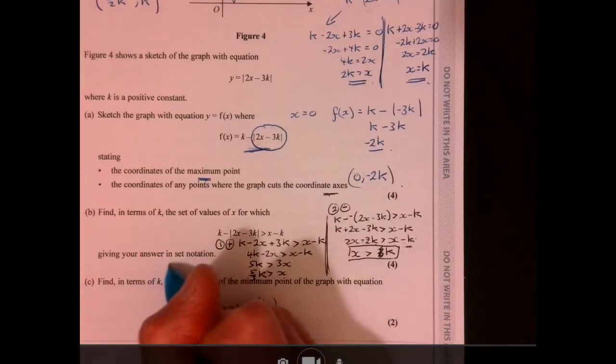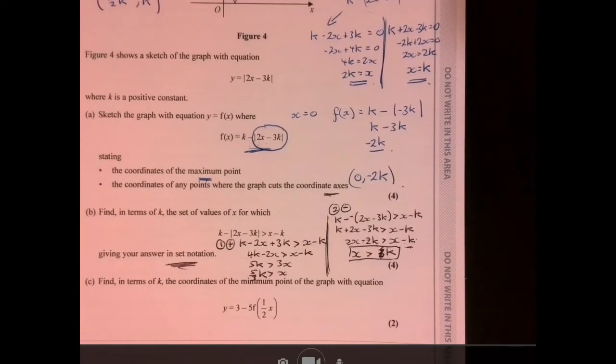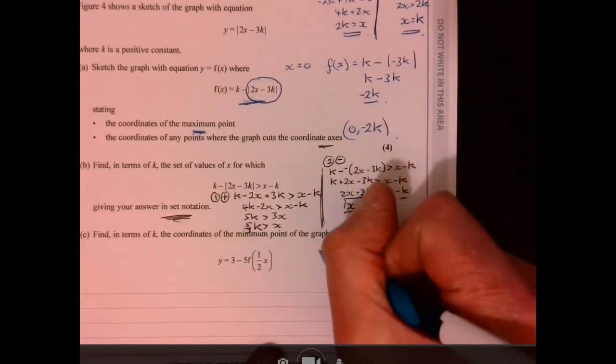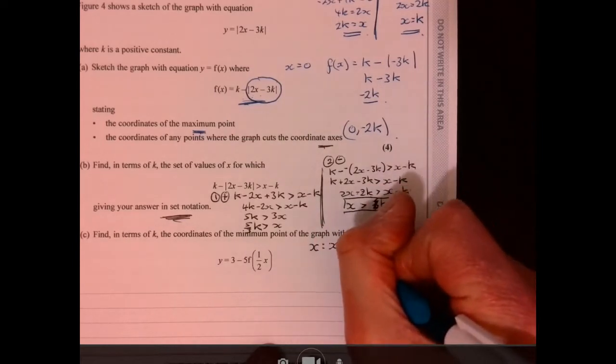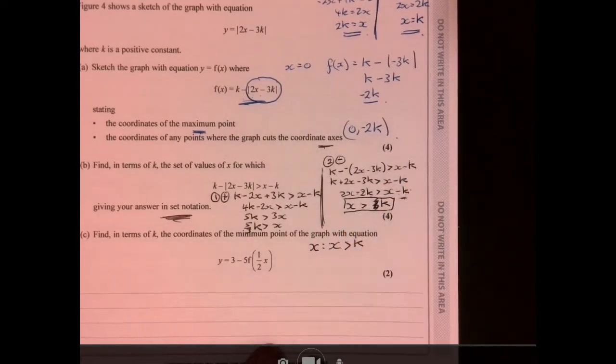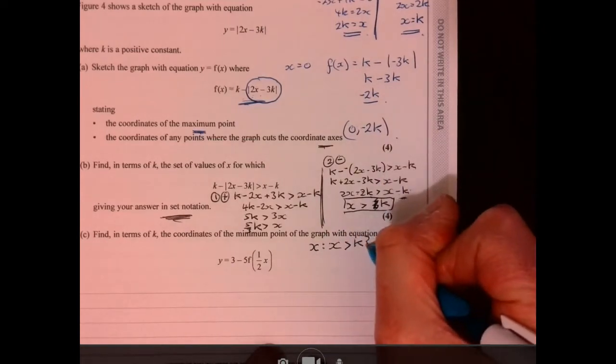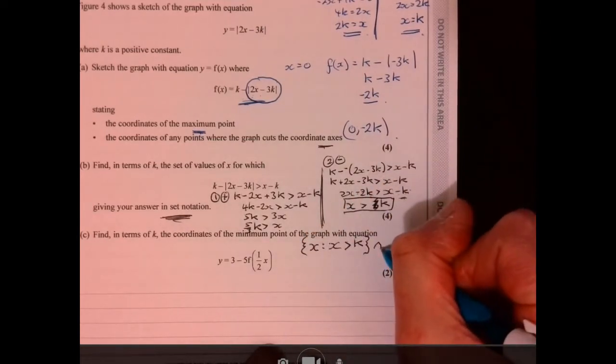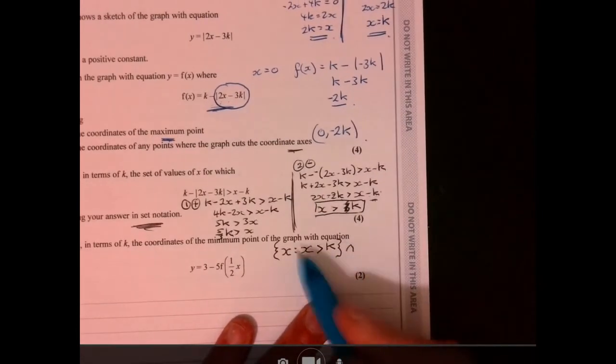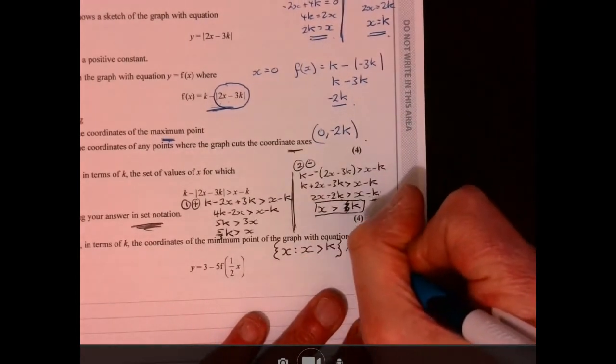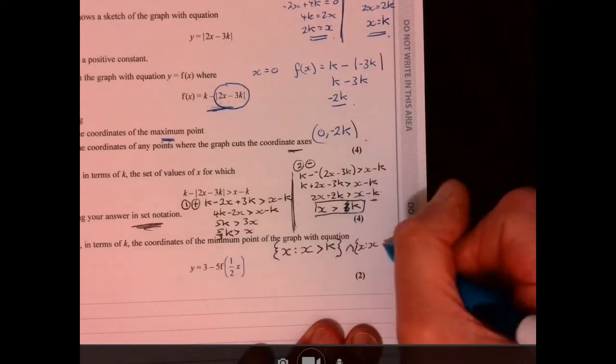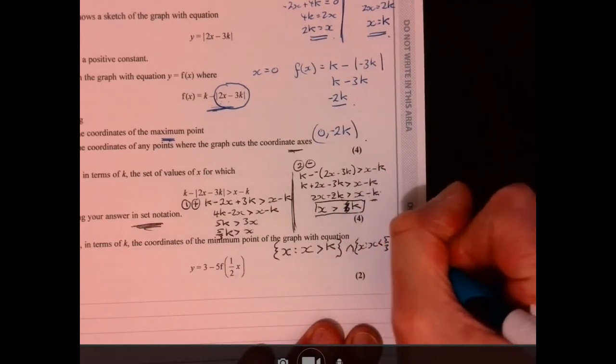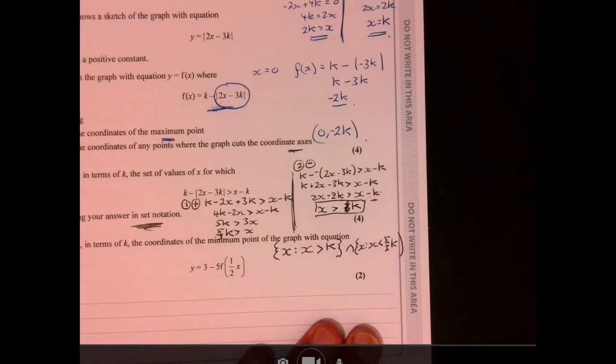Now, it does say to write it in set notation. Don't be scared of set notation. Looks kind of a little bit scary. All it means, it just means to write them like this. Just says that x is a member of the group. It's got to be more than k. And it's got a little squiggly bracket around it. And it's got to intersection. So it's going to be sort of, it could be a member of both. And we've also got, it has to be, it's got to be x has to be less than five-thirds k.